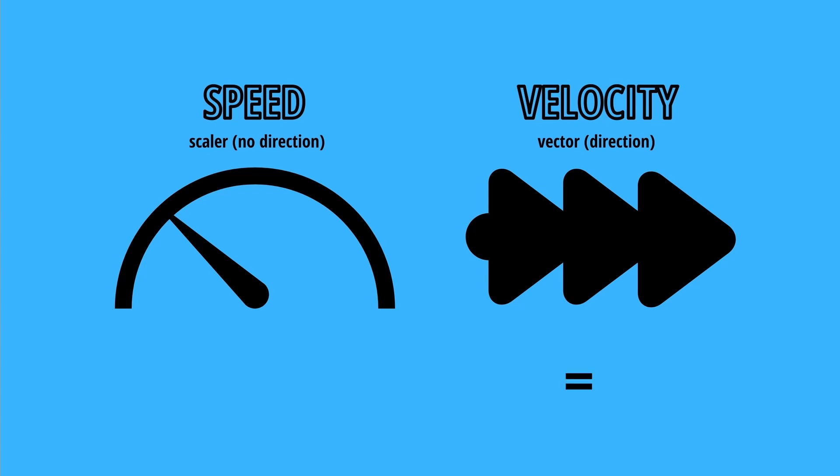Sometimes, the velocity can be zero, even if the object is moving. For instance, an object moves in a circular motion. The velocity of the object relative to the center of the circle is zero, because the distance between the center and the object does not change, so the displacement is zero.